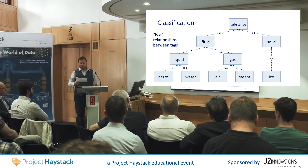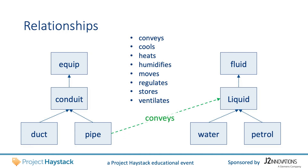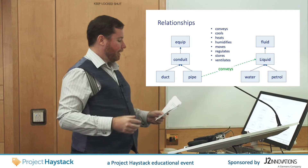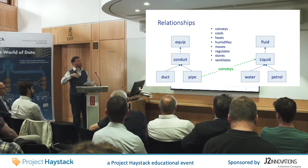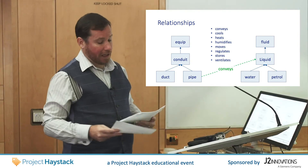These hierarchies are an example of an ISA relationship, but Project Haystack 4 goes further. Version 4 gives us a mechanism to describe other relationships between tags and hierarchies. Here we define that a pipe conveys liquid or water. Note that Haystack gives us two things: both a mechanism to formally define these relationships and a standard library of building automation terms with those relationships already defined. These standard libraries include relationships such as cools, heats, regulates, and ventilates.